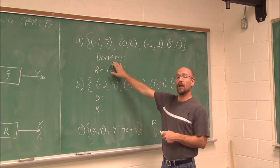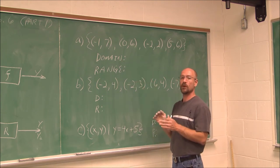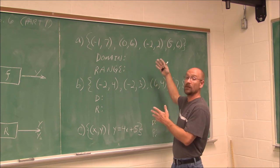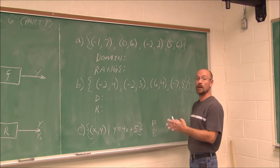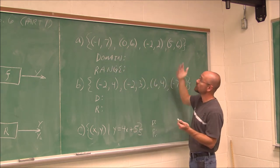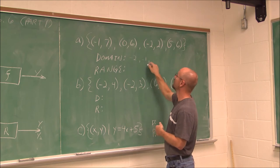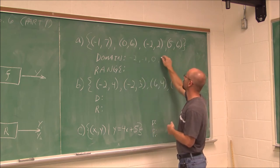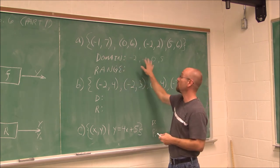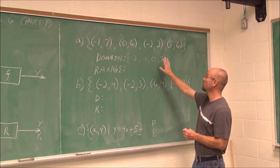Now we're going to define domain. Domain is the set of all the input values. When we talk about domain, we're referring to the x values — our input values. So if we're asked to find domain, we just have to determine what the x values are. It's a general rule that we put them in least to greatest. I look at my x values: negative 1, 0, negative 2, and 5. The smallest value is negative 2, then negative 1, then 0, and the last value is 5. These are my input values. We call that the domain — the set of all the input values. We can use braces here as well. So the domain is {−2, −1, 0, 5}.